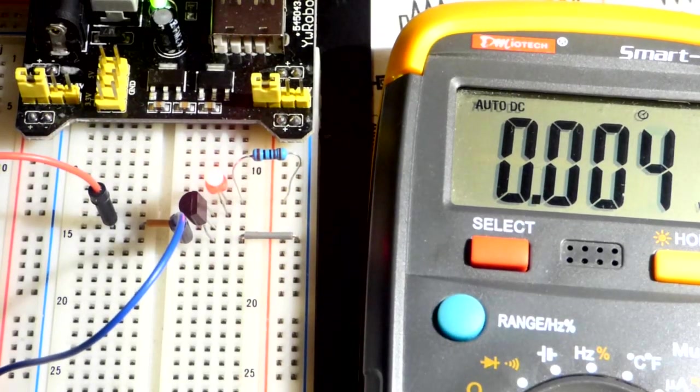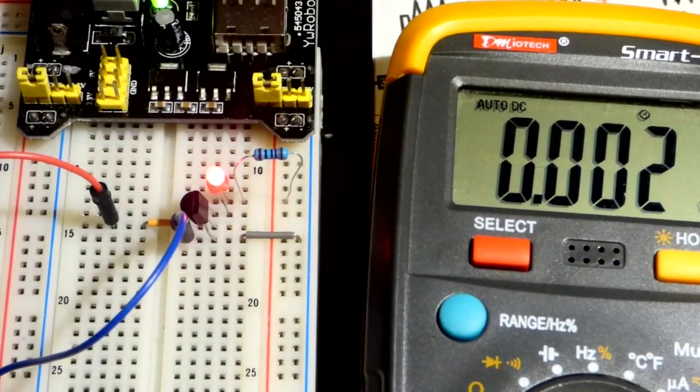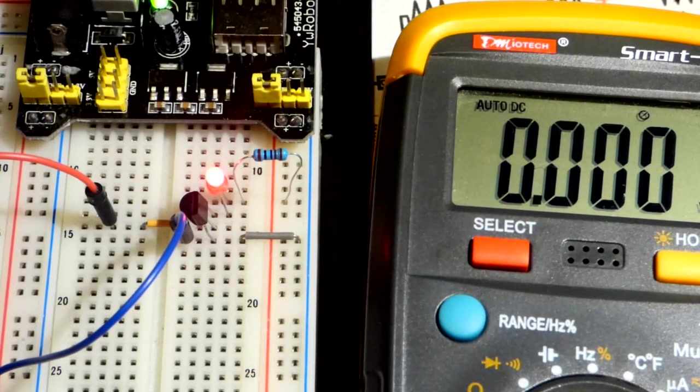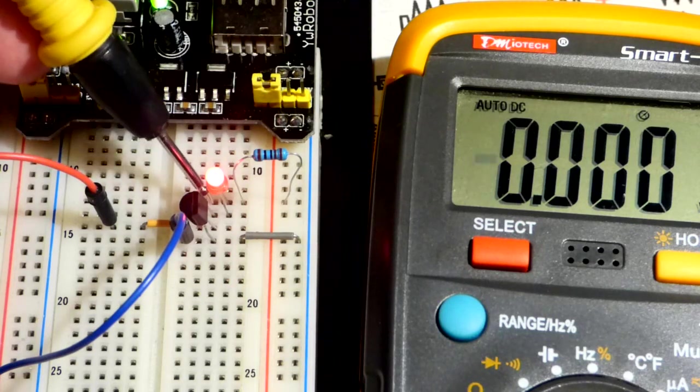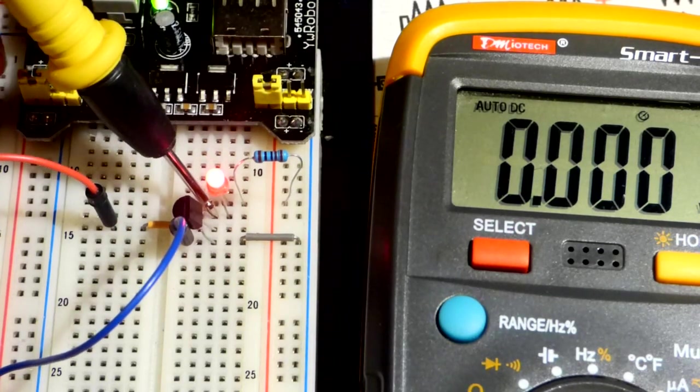So, what we can do is take the black probe there and put that to the source, right up there, the top pin of the transistor.